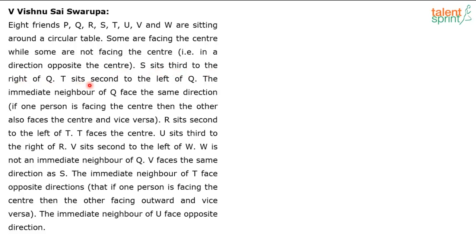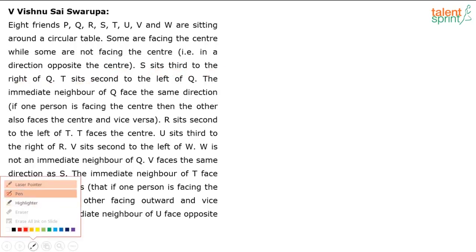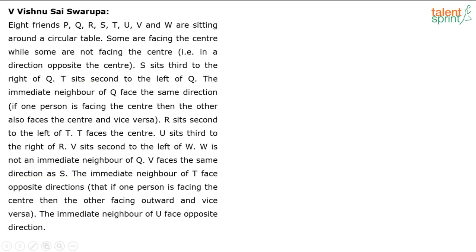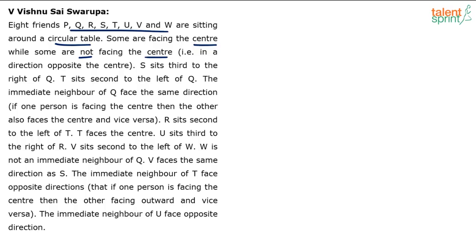Now the information starts. We have to arrange eight persons — P, Q, R, S, T, U, V, W — around a circular table. Some are facing center and some are facing outwards. An important point: when a person is facing the center, left is always taken clockwise and right is anticlockwise. When they are facing outwards, left is anticlockwise and right is clockwise.